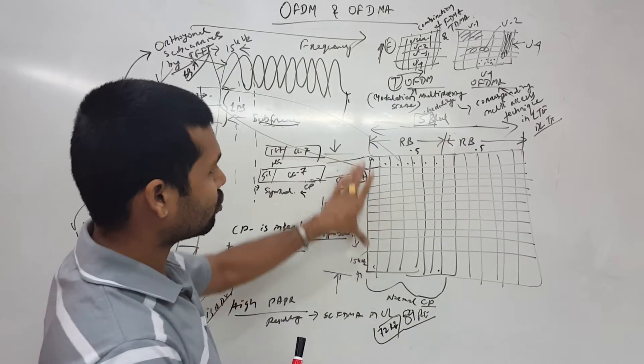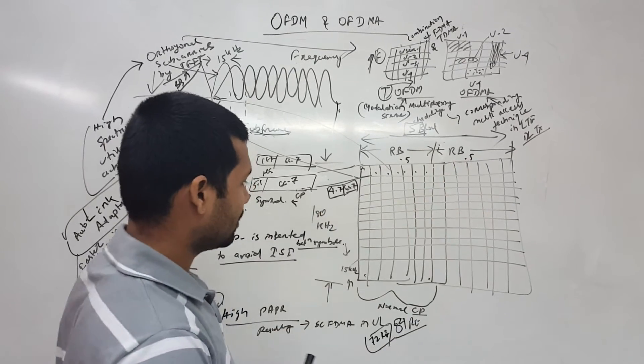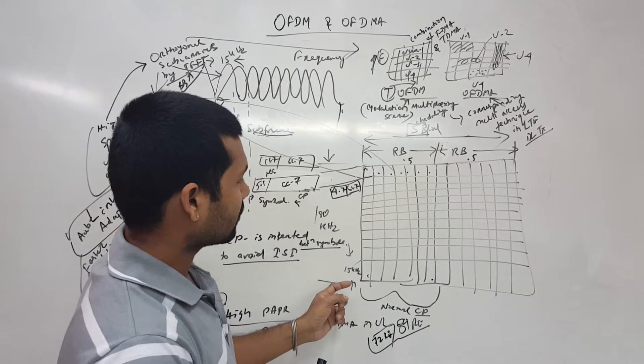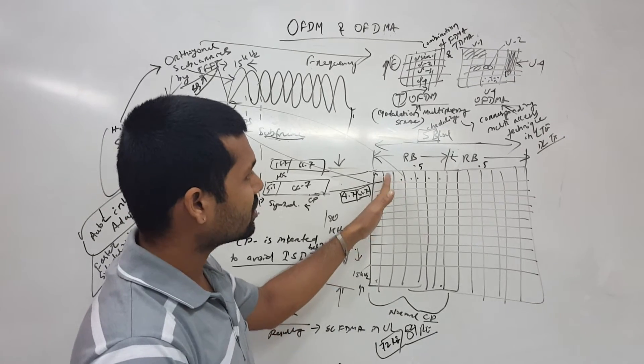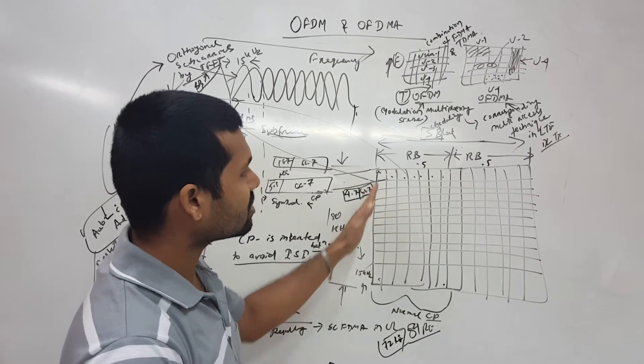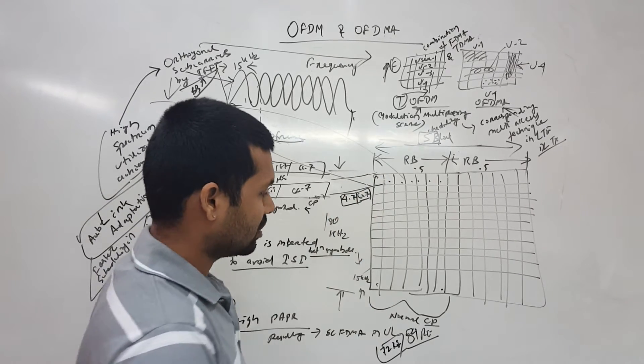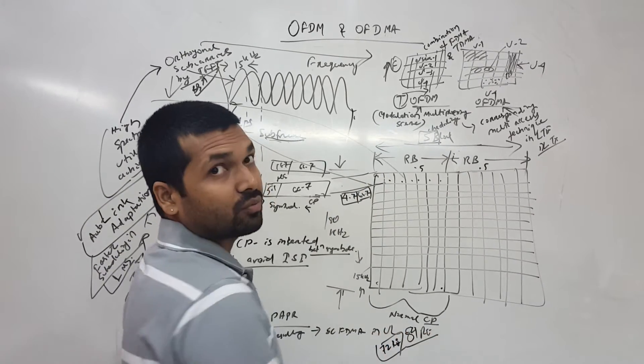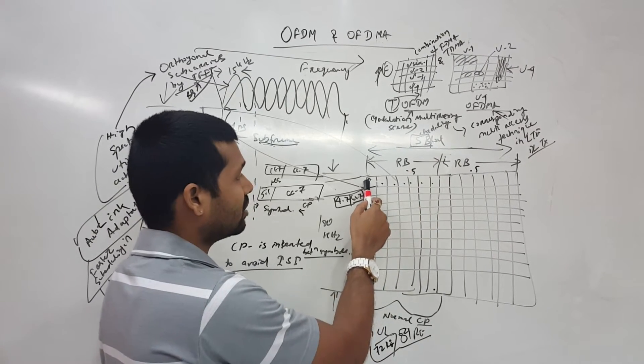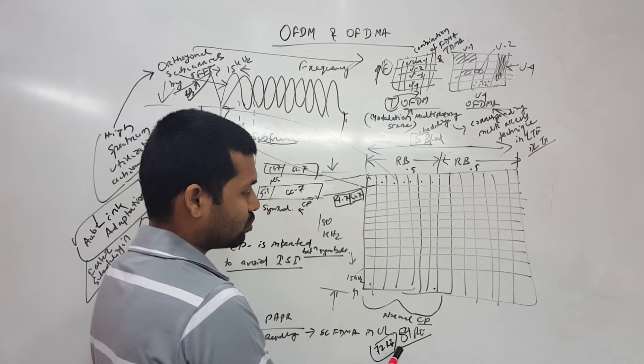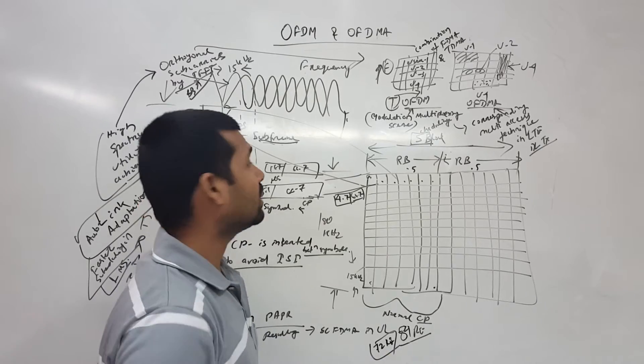We are having 15 kHz times 12 - that is 12 subcarriers each having 15 kHz frequency here in the frequency domain and the time domain. In OFDM we are having a solution for the inter-symbol interference - we use cyclic prefix. In case of normal cyclic prefix we are having 7 symbols in one resource block times 12 subcarriers, so it would be 84 resource elements.